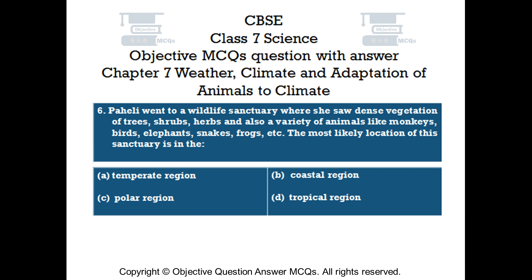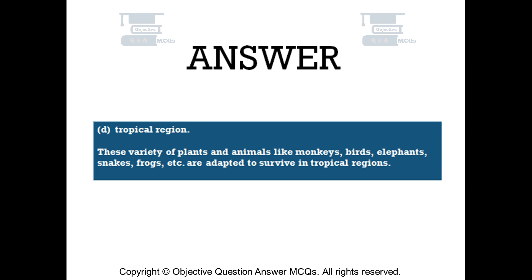Question number 6. Pahali went to a wildlife sanctuary where she saw dense vegetation of trees, shrubs, herbs, and also a variety of animals like monkeys, birds, elephants, snakes, frogs, etc. The most likely location of the sanctuary is: Option A — temperate region. Option B — coastal region. Option C — polar region. Option D — tropical region. The right answer is Option D: tropical region. These variety of plants and animals like monkeys, birds, elephants, snakes, frogs, etc. are adapted to survive in tropical regions.